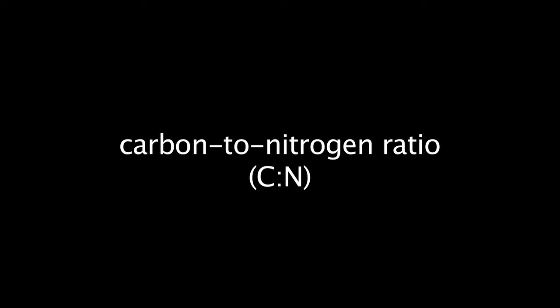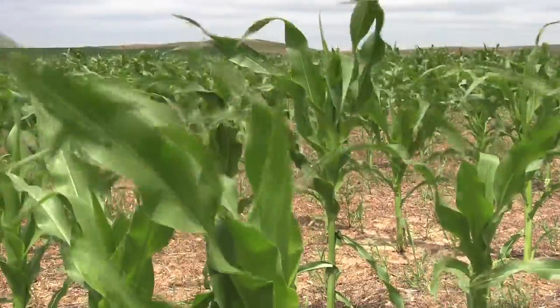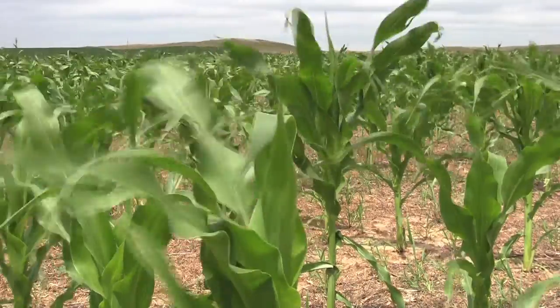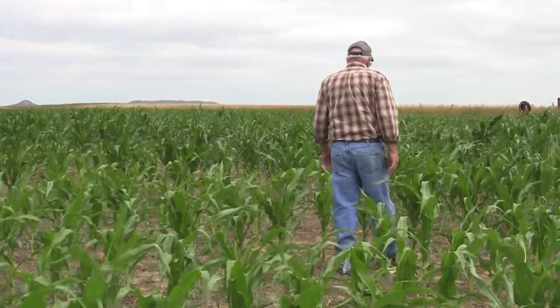The carbon to nitrogen ratio on the surface and in the soil is important during the entire crop rotation. The carbon to nitrogen ratio is the ratio of the amount of carbon per the amount of nitrogen. It is important because it helps to control the availability of the nitrogen that's in the soil. Microorganisms in the soil use the nitrogen as fuel to break down the carbon in the plant residues. What this means to you, the farmer, is that the carbon to nitrogen ratio controls how well and how much of the nitrogen in the soil is available to your crop.